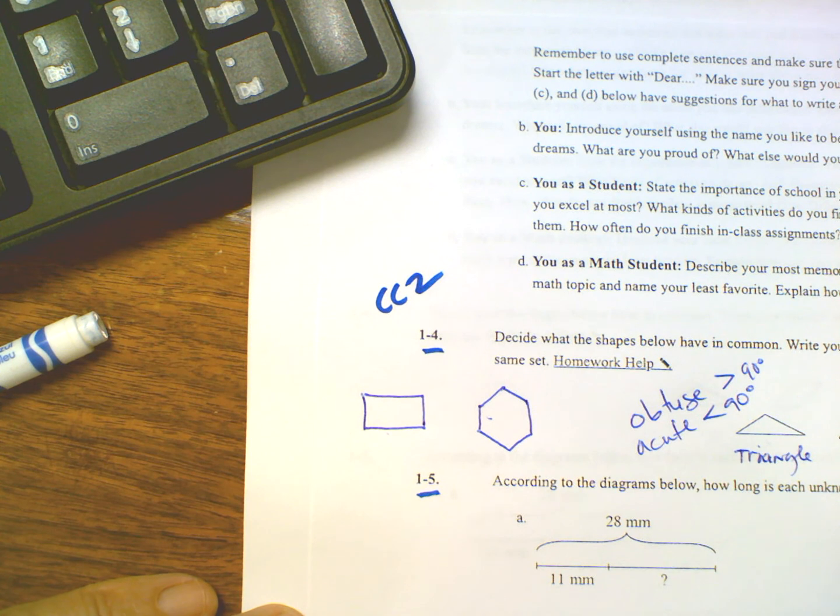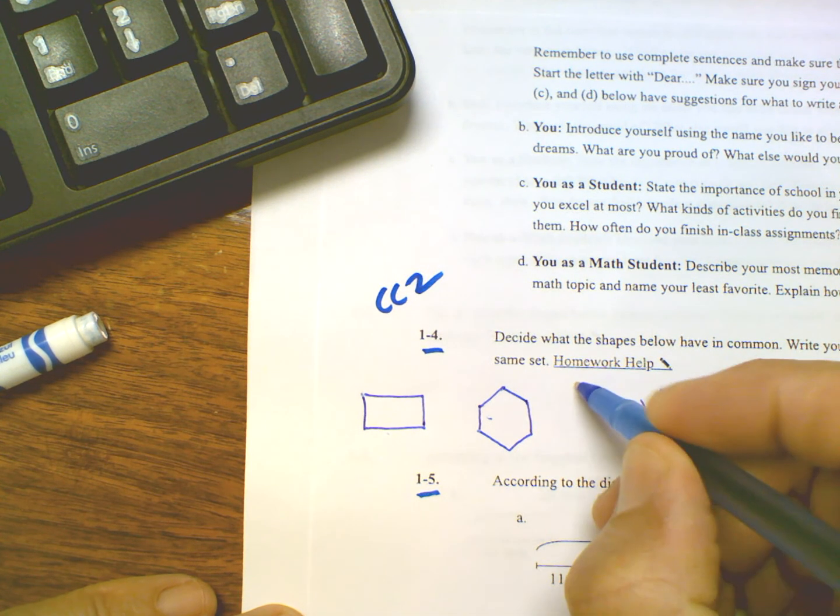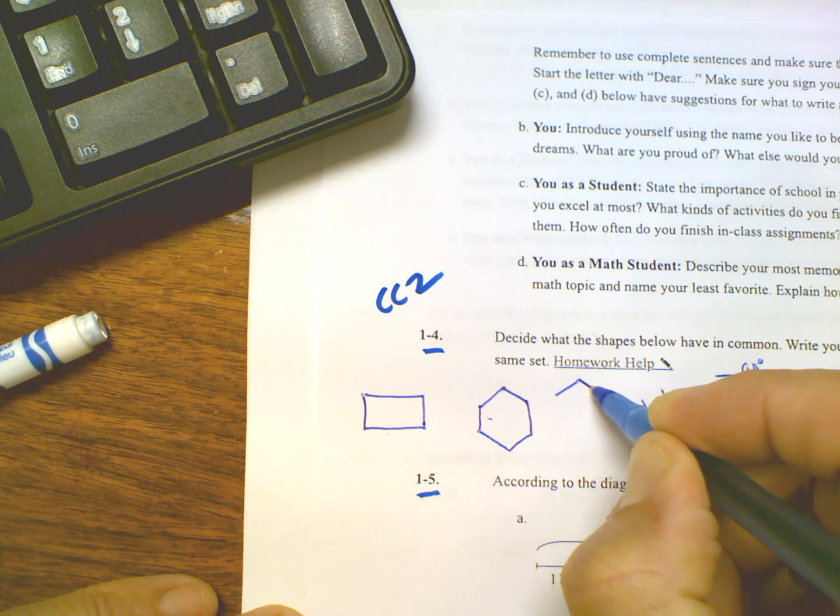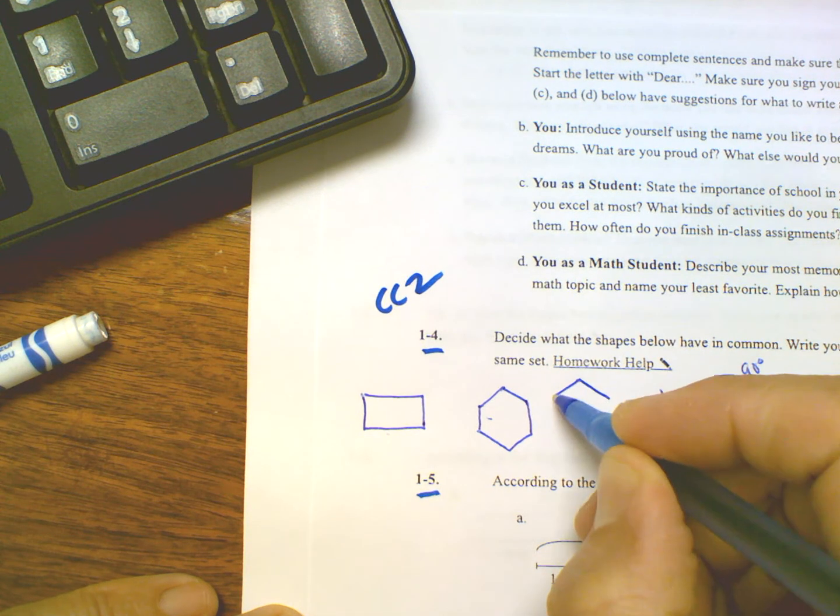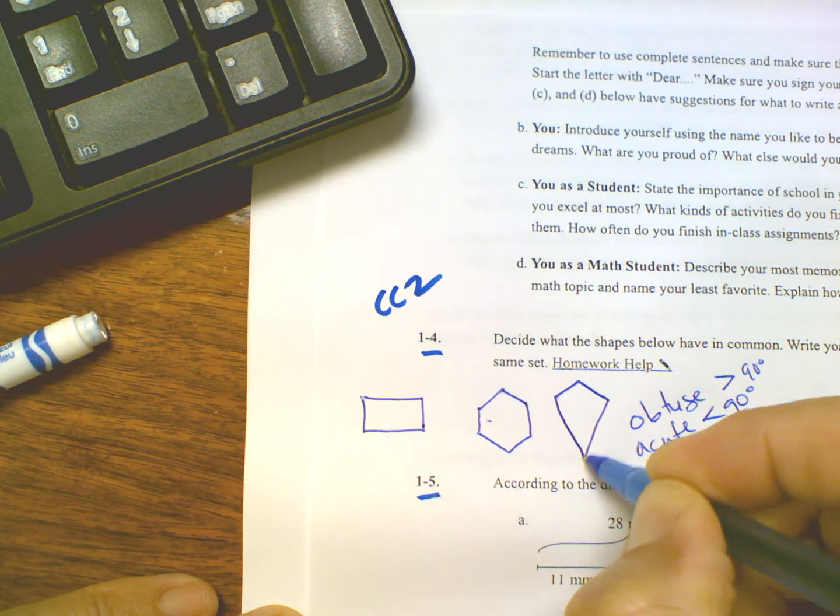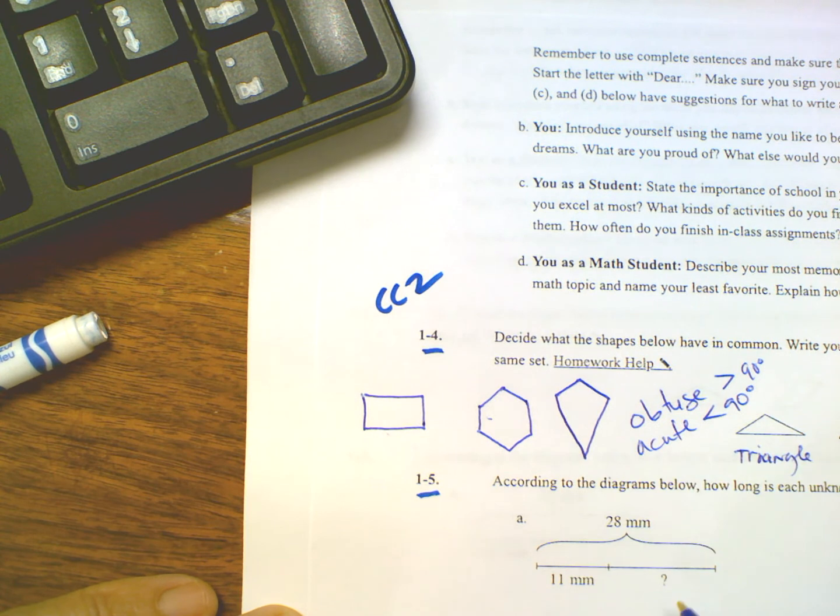The other one would be what they call a kite. It looks like this. That's another polygon and that would have obtuse angles. A kite is what they call that. Okay, so those are my shapes I'll draw. Let's move on to problem 1-5.